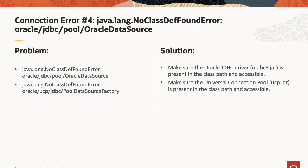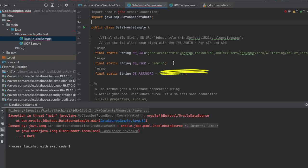The fourth connection error is also a common one: no class definition found error. This can be caused when the Oracle JDBC driver or UCP is not in the class path. The solution is to make sure that the Oracle JDBC driver is in the class path, and if you're using UCP, then UCP.jar is also in the class path. To simulate this error, I have removed the JDBC driver from my local Maven repository. You can see that the sample is showing a compilation error, and when you run it you will get a no class definition found error.